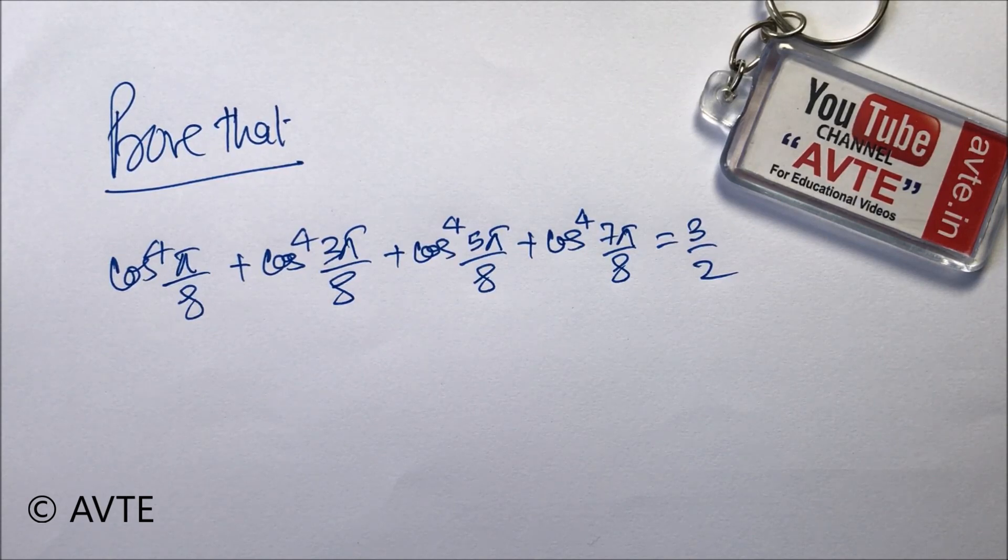Prove that cos⁴(π/8) + cos⁴(3π/8) + cos⁴(5π/8) + cos⁴(7π/8) equals 3/2.